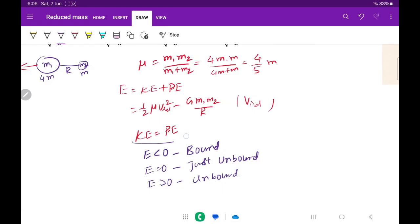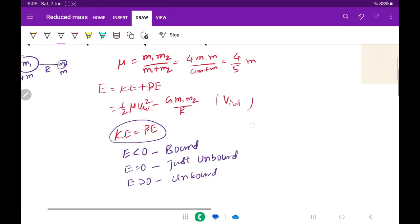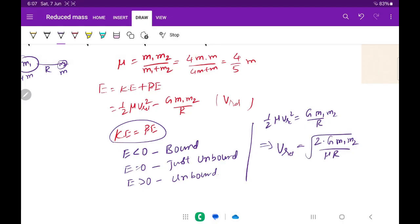In our problem, we will equate kinetic energy equal to potential energy. This will yield half mu v-relative squared equals G m1 m2 divided by r. If I simplify it, I will get v-relative equals square root of 2 times capital G m1 m2 divided by mu capital r. G here is the universal gravitational constant.